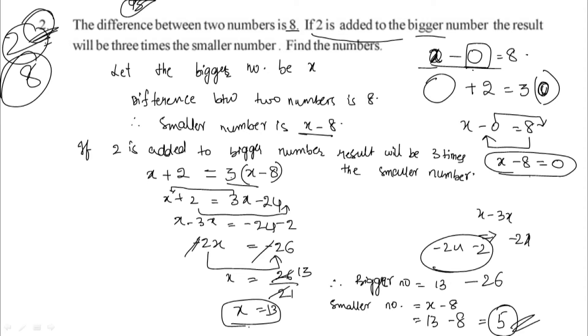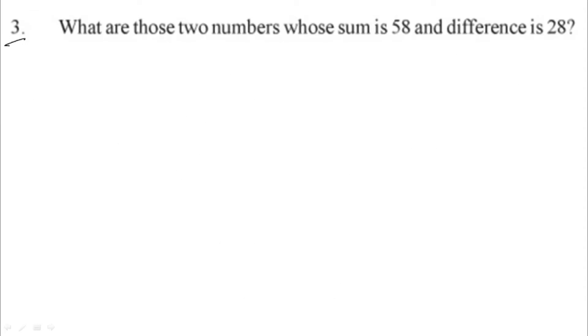Smaller number is 5 and bigger number is 13. Third question: What are those two numbers whose sum is 58 and difference is 28?